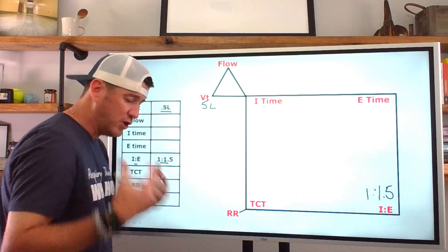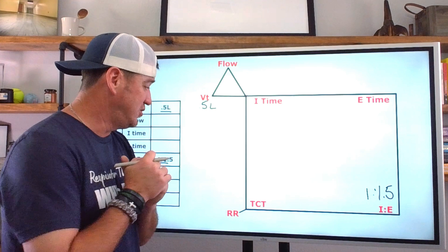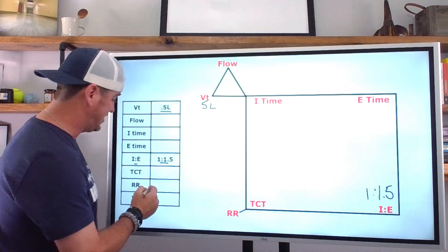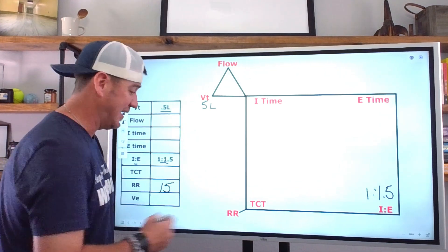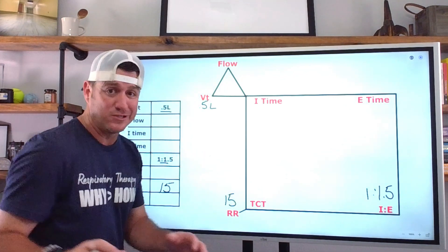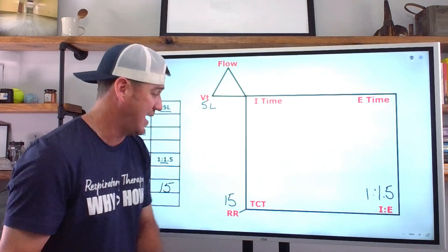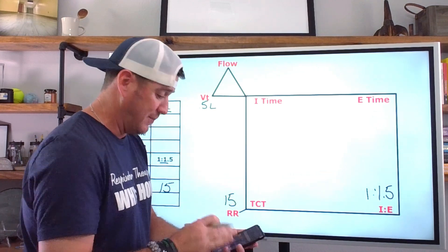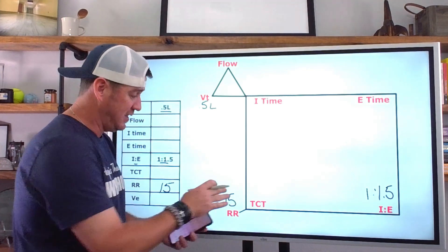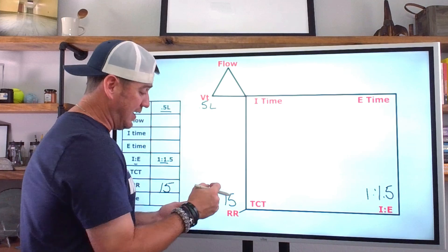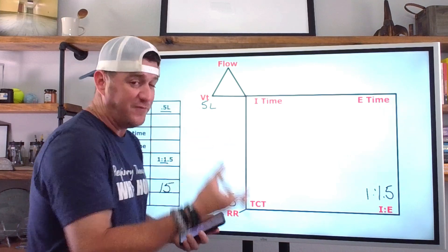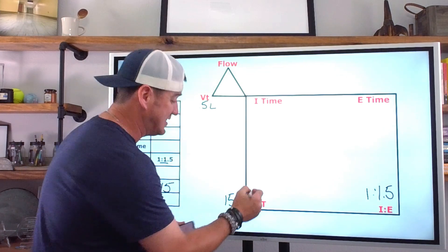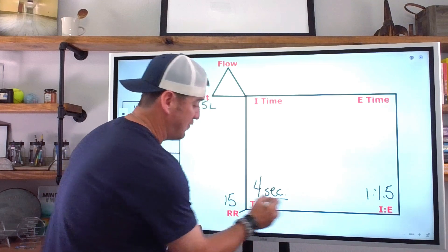What we're going to do is say, okay, I need more information. Say you give me a respiratory rate — let's say the respiratory rate is 15. Now I've got something to work with, because now I can calculate my total cycle time. If my rate is 15 and I'm giving 15 breaths a minute, all I have to do is say 60 seconds divided by 15, which means my total cycle time is 4 seconds.